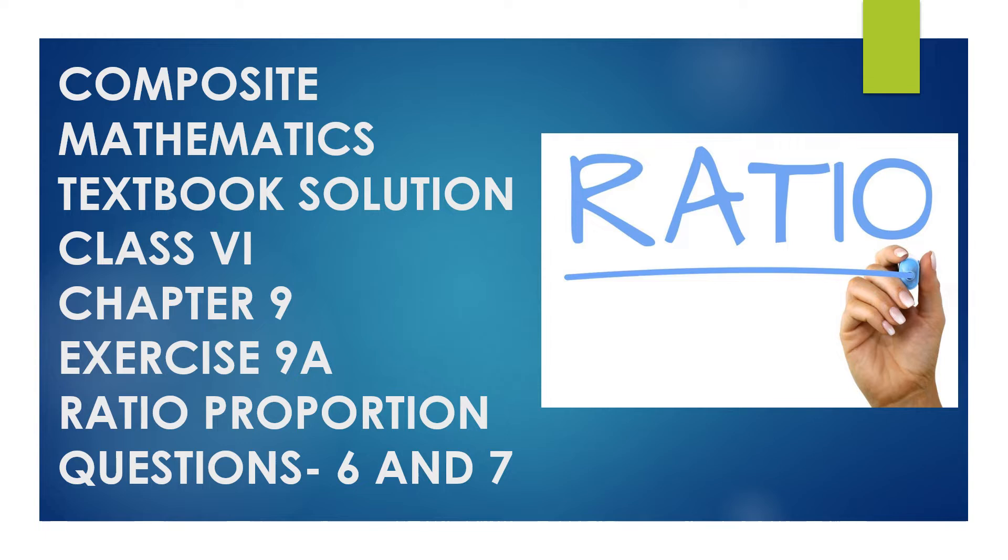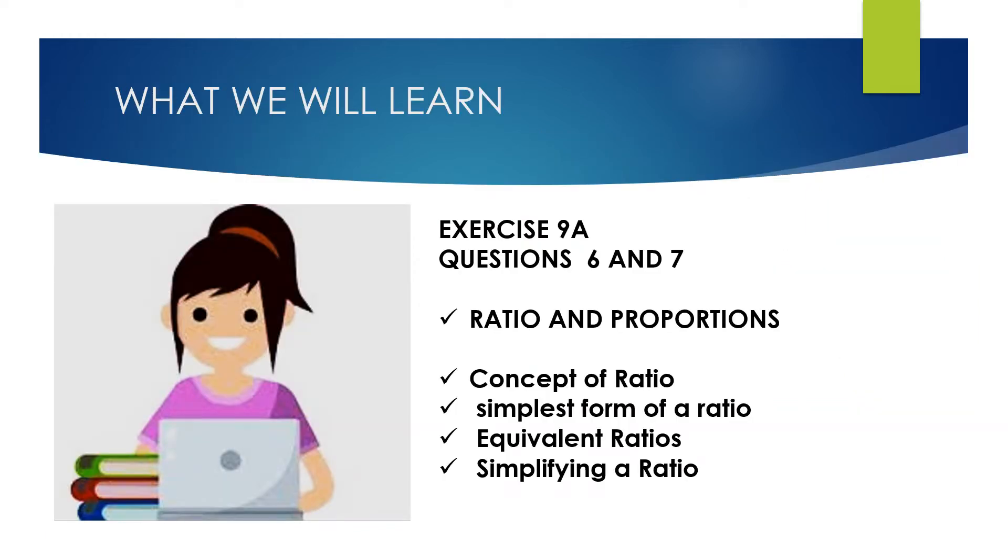Today we will learn and solve Exercise 9A questions 1 to 10 of Chapter 9, chapter name is Ratio of Proportion and Unitary Method. Topics are concept of ratio, simplest form of a ratio, equivalent ratios, and simplifying ratios.